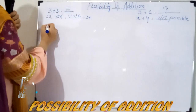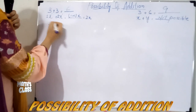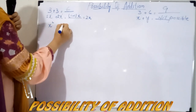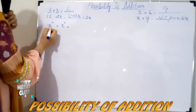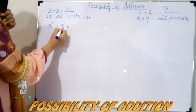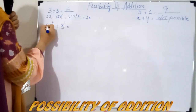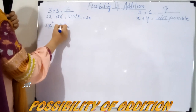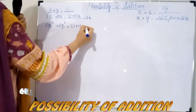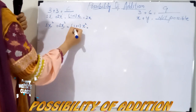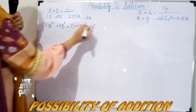Now, addition between variables with some power — for example, x square plus x square. Again, you can see the variable is the same and their powers are also the same, so simply add their coefficients. The coefficient is 1 and coefficient is 1; add their coefficients: 1 plus 1, and the variable part will remain the same — 1 plus 1 gives 2x square.